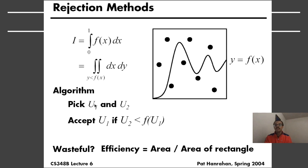So you pick two uniform random numbers, u1 and u2, and you accept u1, which is the x coordinate here, only if the y coordinate u2 is less than f. That ensures that you accept samples which are below the curve you want to integrate.